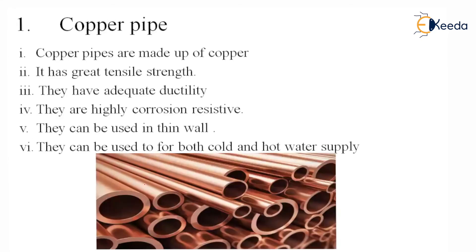Copper pipe. Copper pipes are made up of copper. They have great tensile strength — that is, they can be elongated and when pulled in opposite directions, they can sustain and will not break easily. They have adequate ductility and are highly corrosion resistive. Acidic water or water with high pH value can be safely used in these pipes.